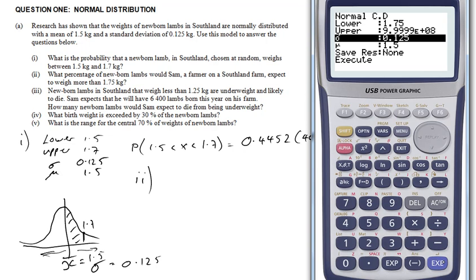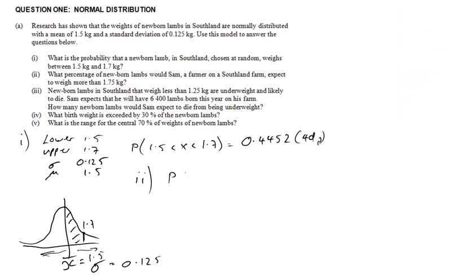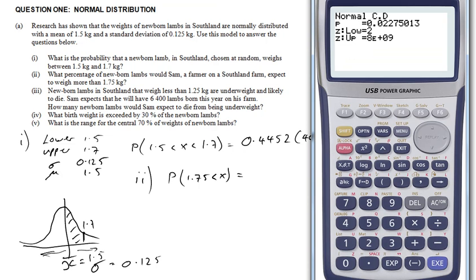If you're doing the other way around, if you want to find smaller than a number, you'd pick a very small number so you'd put a minus in front of it. So this time I'm going to get the probability that 1.75 is smaller than x equals 0.02275.